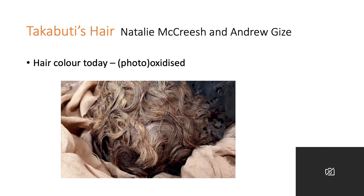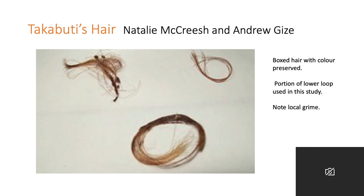Here's the hair colour today — bleached or photo-oxidized — and that's probably happened since the opening of the mummy in 1835, so it's quite a fast reaction. If we were to use that material, we would get false interpretations. But we're lucky in that some hair was boxed, and that has preserved the colour, as you can see here. For our analyses, we used the lower lock, the big one at the bottom there. But notice, obvious in both samples, is the local grime — dirt was adhering to something on the hair.